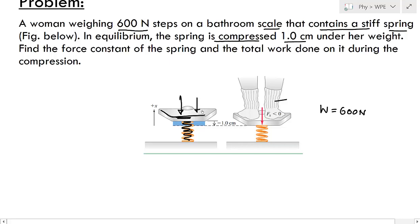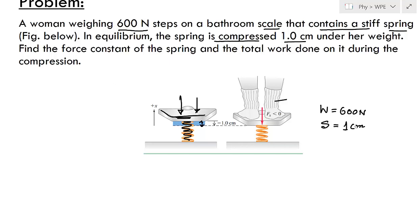Once she comes on this bathroom scale, the spring is compressed by one centimeter. So this compression distance is given as one centimeter. We have to find two things: one is the spring constant k, and how much work has been done on the spring.